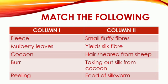Match the following. Column 1 consists of: fleece, mulberry leaves, cocoon, burr, reeling. Column 2 consists of: small fluffy fibers, silk fiber, hair sheared from sheep, taking out silk from cocoon, and food of silkworm.